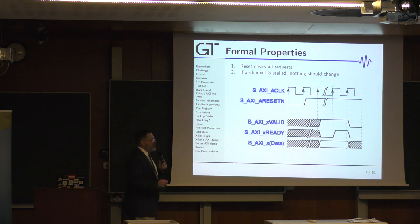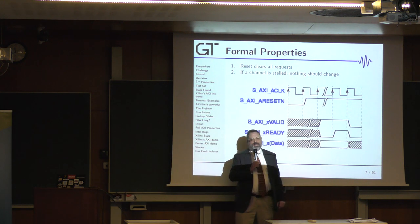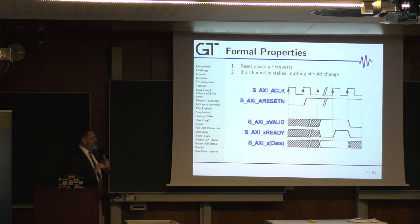Property number two. If a channel is stalled, and here you have an example where there's a valid and not ready. That's a stall condition. If the channel is ever stalled, nothing's allowed to change until you have both valid and ready. Fortunately, tiling doesn't do this. Yes, I'm a little disappointed, but I find a whole lot of bugs of dropped packets right here with just this property. There you go. There's a stall. The data associated with the channel has to stay constant. The valid has to stay high.